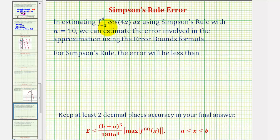In estimating the definite integral of cosine 4x from negative one to four using Simpson's rule with n equals 10, we can estimate the error involved in the approximation using the error bounds formula given below.